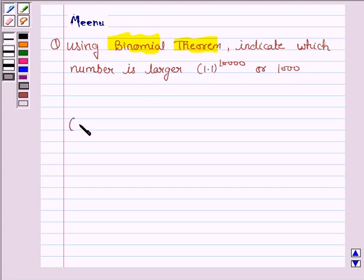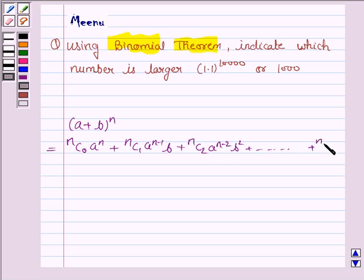we will be using the expansion of (a + b) to the power n and it is equal to nC0 a to the power n plus nC1 a to the power n minus 1 times b plus nC2 a to the power n minus 2 times b squared and so on. And the last term will be nCn b to the power n.